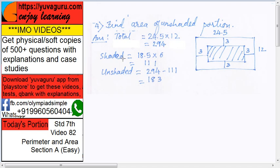Now shaded is how much? Shaded means you want a dimension. This total is 24.5, this 3 gone, this 3 gone. So 6 gone. So it becomes 18.5, this dimension.